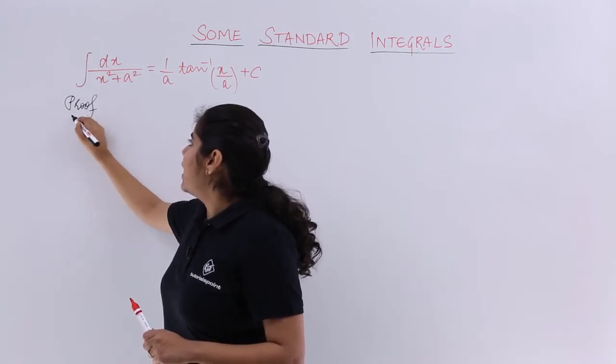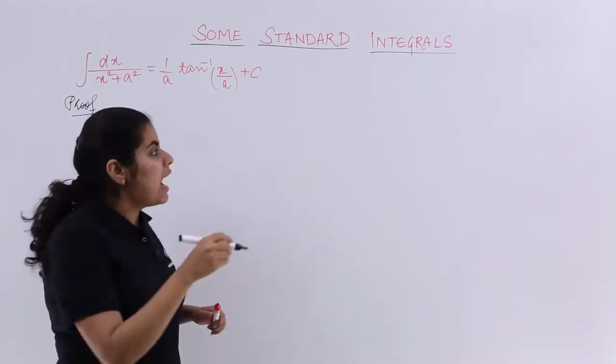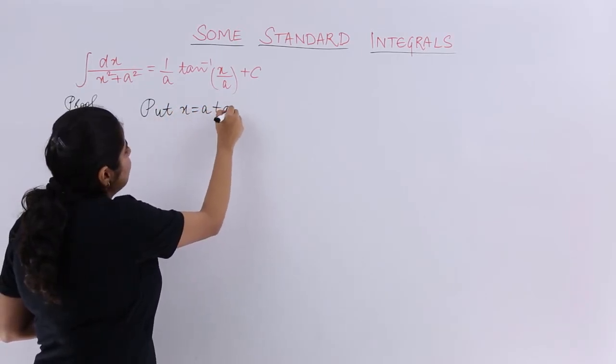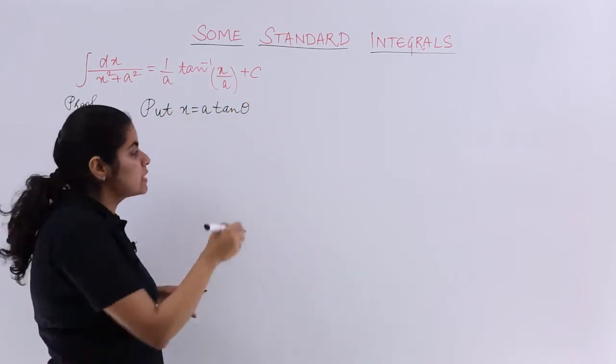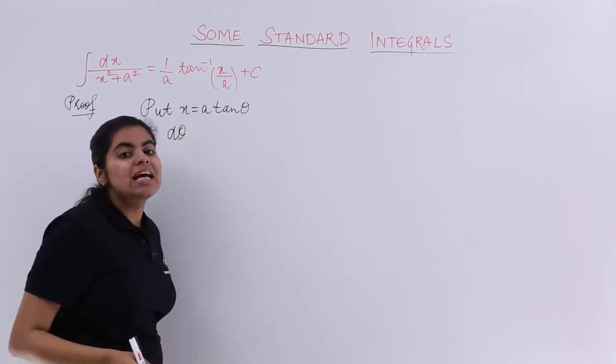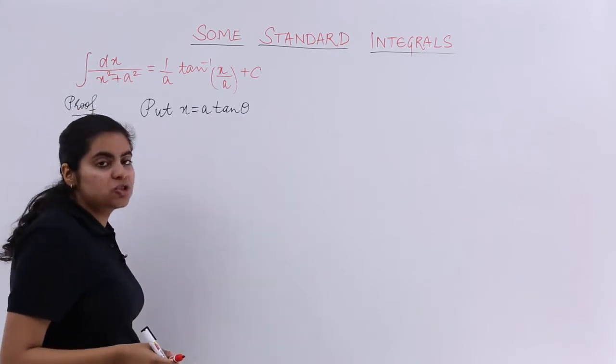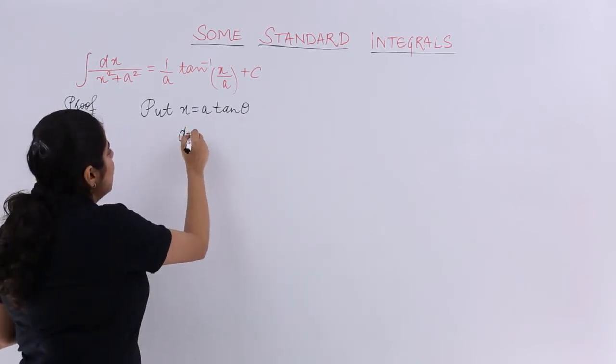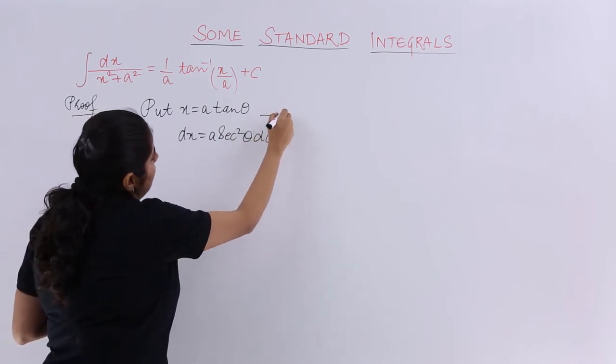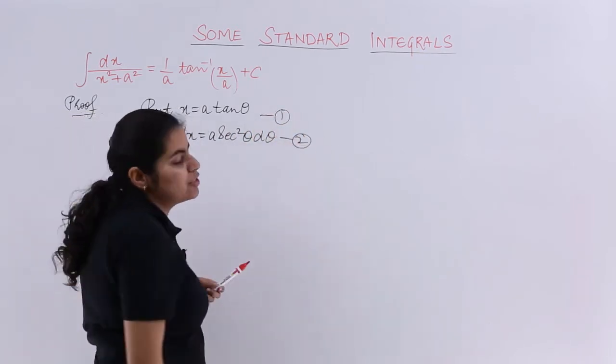I write proof and what do I need to substitute? I need to write put x is equal to a tan theta, or in short what is my dx? My dx is equal to the differentiation of this above statement which is a secant square theta d theta. Equations are made 1 and 2.